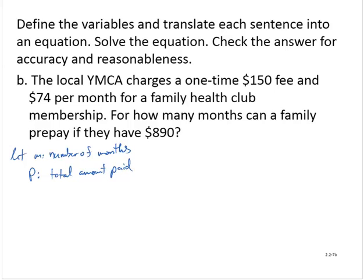Then I can relate these variables with the model. The total amount paid is equal to the one-time $150 fee and an additional $74 per month. For how many months can a family prepay if they have $890? The total amount paid would be in terms of dollars. So I'm going to substitute 890 for P and solve for M.